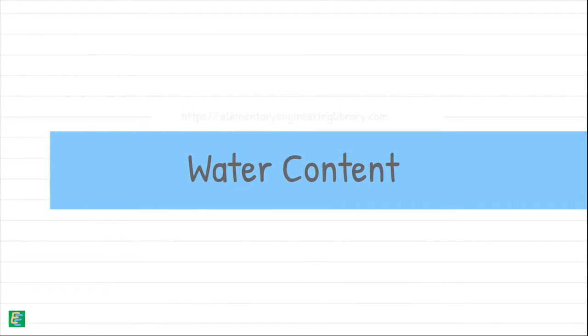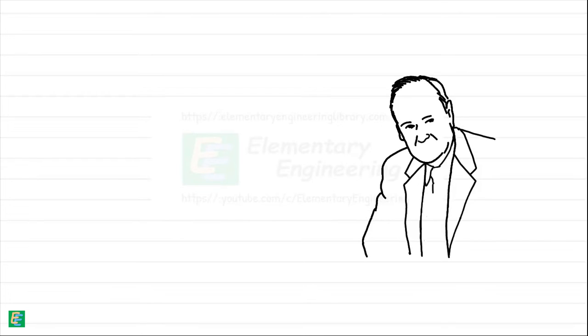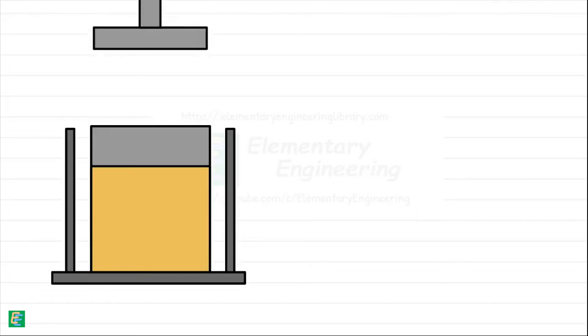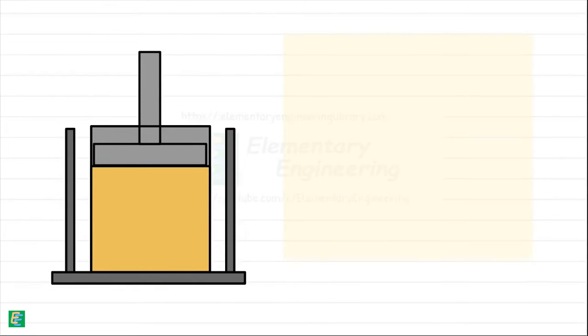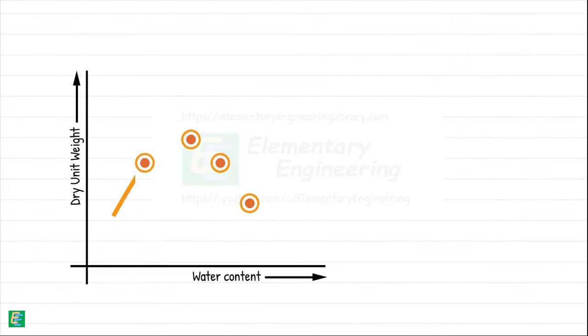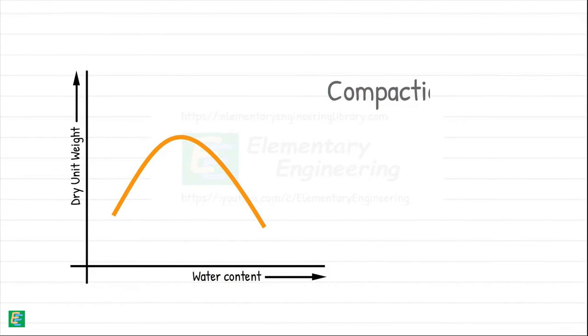Let's begin with water content. Soil scientist and civil engineer R.R. Proctor devised an experiment named after him as Standard Proctor Test. In the test, soil is compacted by adding different amounts of water content to it, and respective dry densities obtained are recorded. The obtained data is plotted in a curve that is known as compaction curve.